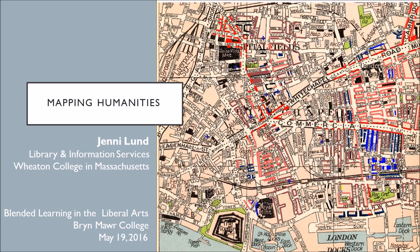My role on this panel is to set the context. Mapping in the humanities is different from the mapping I had done before, not in the humanities. So I would like to set the context for why it's different, and then I'd also like to make a few suggestions for how to handle data.